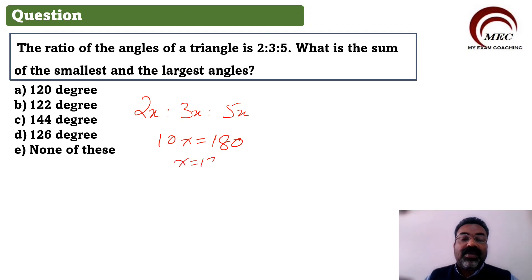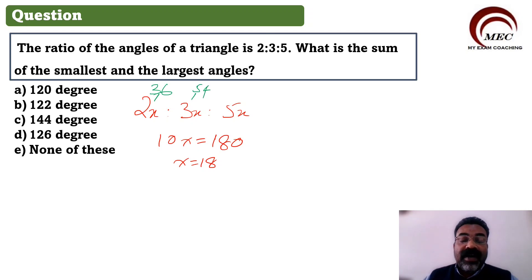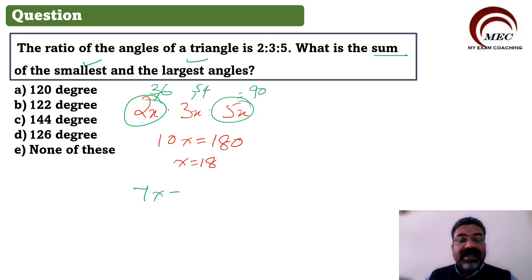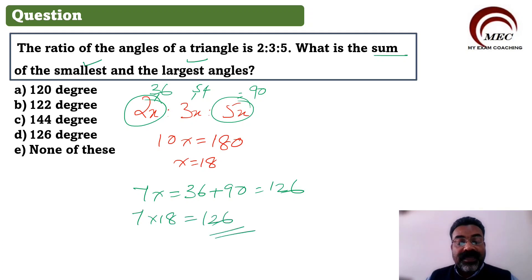We know 10x is equal to the total sum of angles of a triangle, which is 180 degrees. So x is equal to 18. The first angle 2x equals 36, 3x equals 54, and 5x equals 90. What we want is the sum of the smallest and the largest — smallest is 2x, largest is 5x, total is 7x. 7x equals 36 plus 90, which equals 126. From the given options, mark the correct answer as option D — 126 degrees.